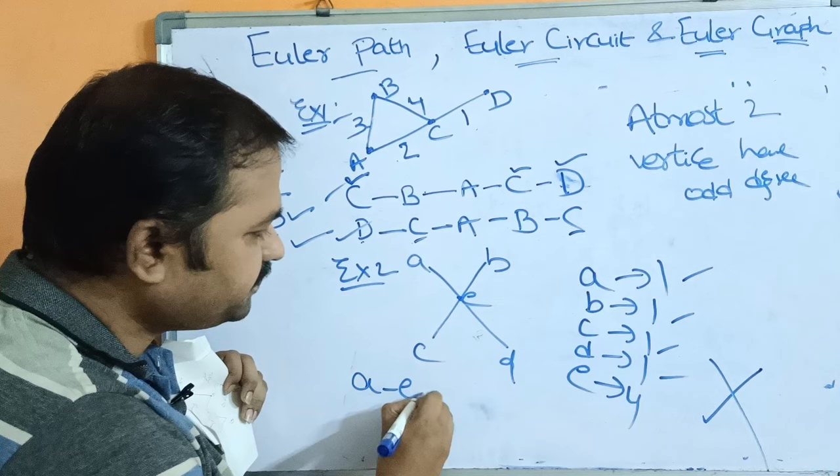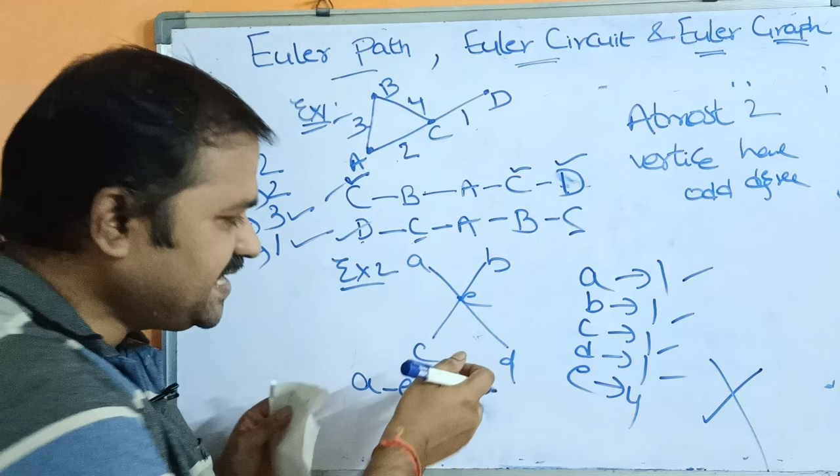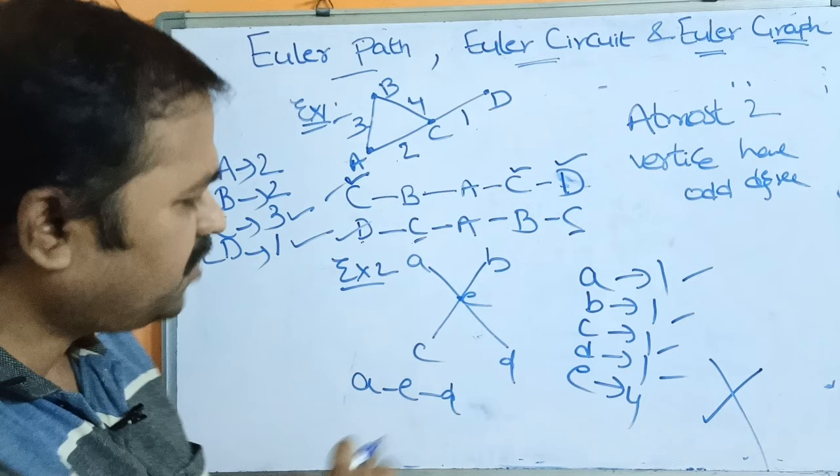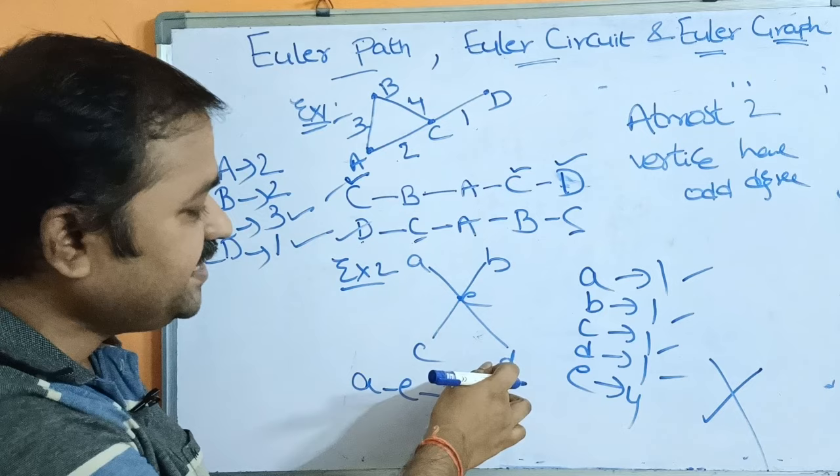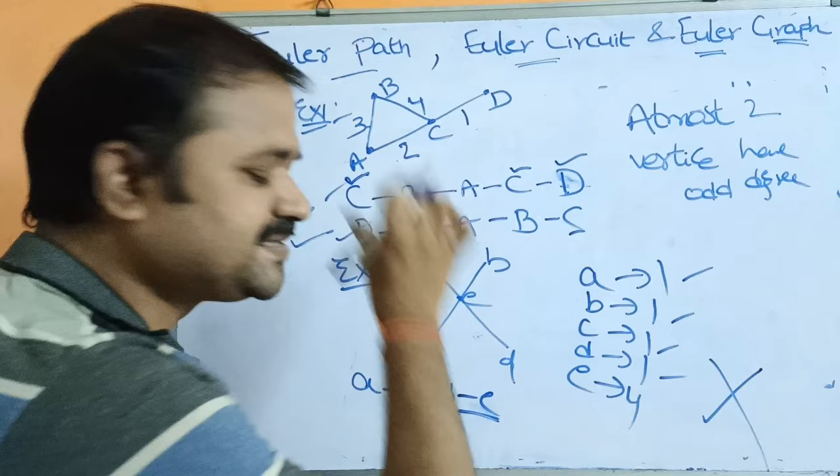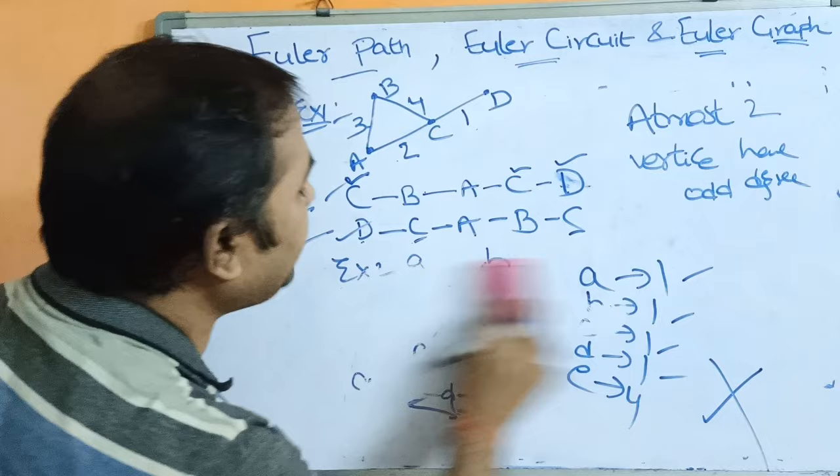To confirm: let us start from A, go to E, then E to D. From D there is no other path, so we need to backtrack. But the edge E to D is already visited, and visiting it again violates the rule. This confirms that the graph does not have any Euler path.